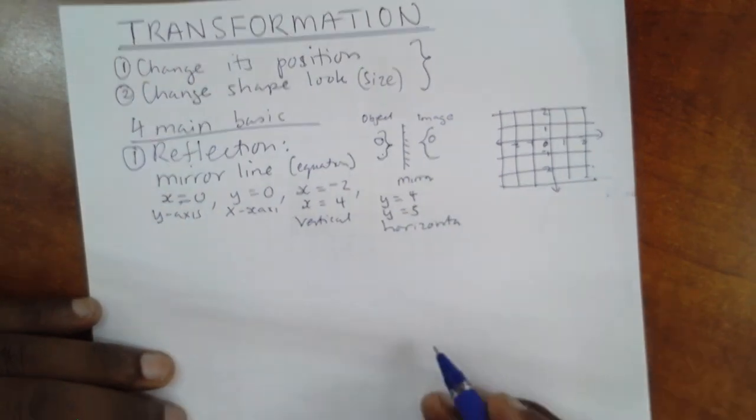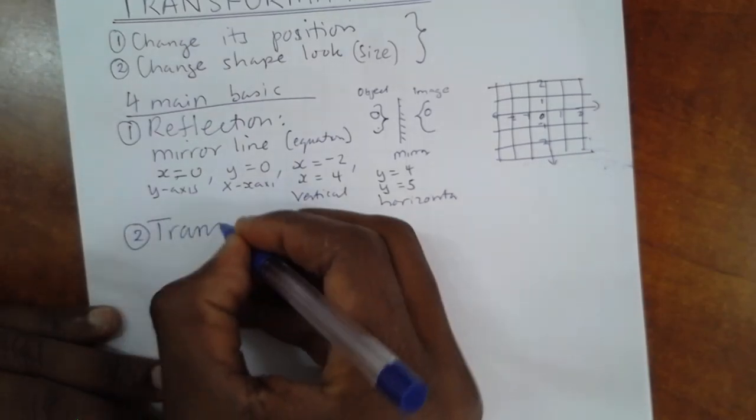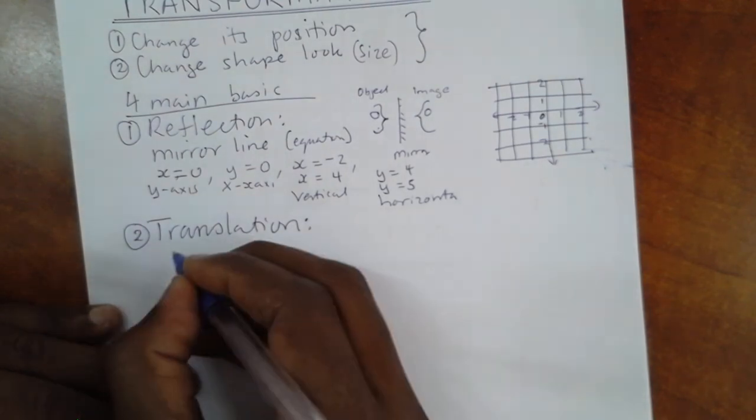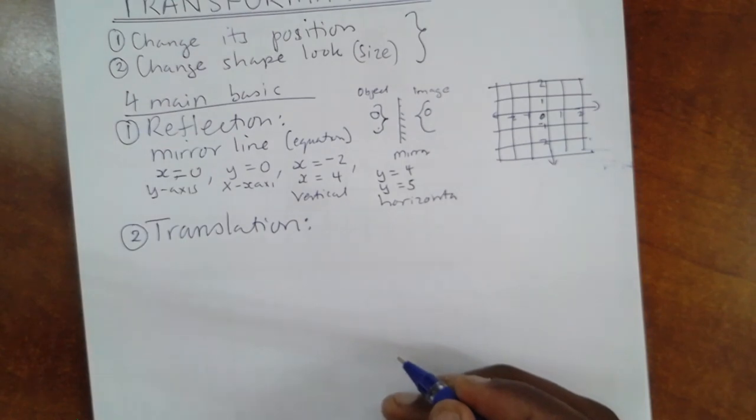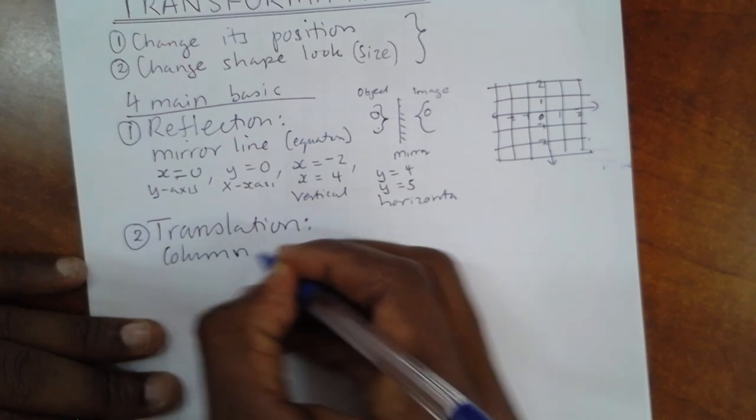Number two, we need translation. Now, to carry on a translation, we need, in other words, we call it a column vector.